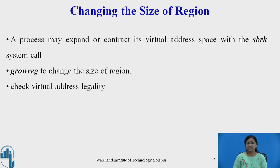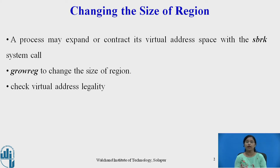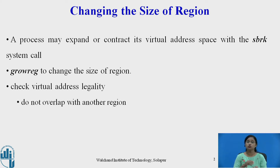While changing or growing the size of a region, it is necessary to check the virtual address legality. For example, if a process total size is only 8 MB and already 7 MB are occupied, and the process wishes to attach one more 2 MB after 7 MB, then that is not possible. The kernel must check whether that virtual address is legal and that the virtual address does not overlap with other regions before growing the region.